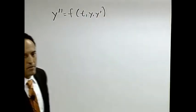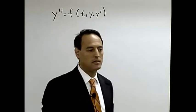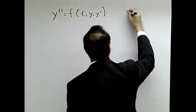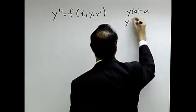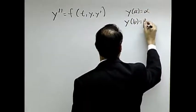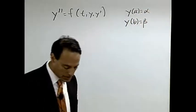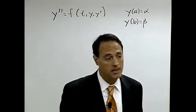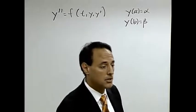I can still have the same boundary conditions as before. Let's say y at a is equal to alpha, y at b is equal to beta. And then I ask the question, I would like to solve this for some generic f. Now the f here might be nonlinear.